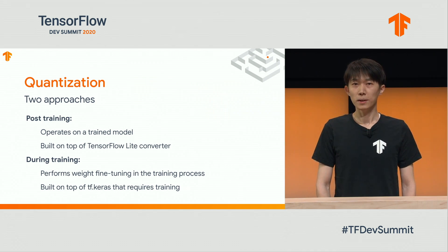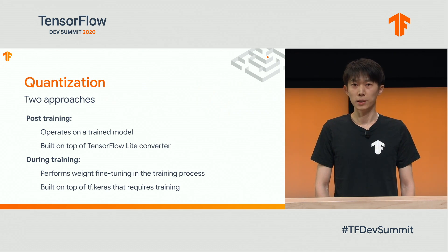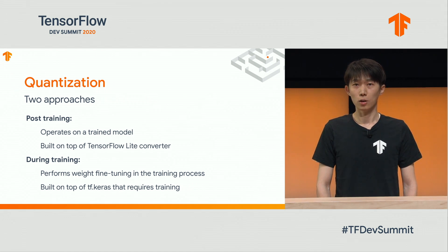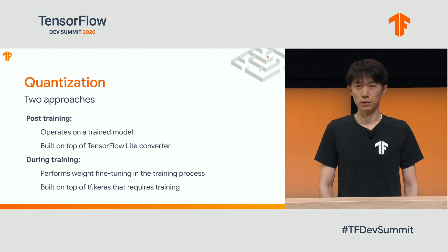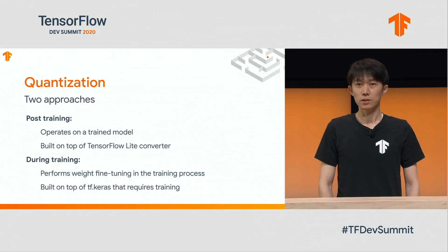There are two main approaches to quantization: post-training and during-training. Post-training operates on an already-trained model and is built on top of TensorFlow Lite Converter. During-training quantization performs additional weight fine-tuning, and since training is required, it is built on top of the TensorFlow Keras API.